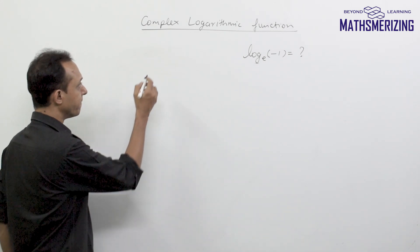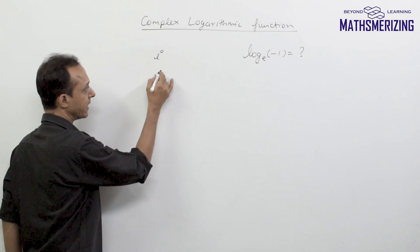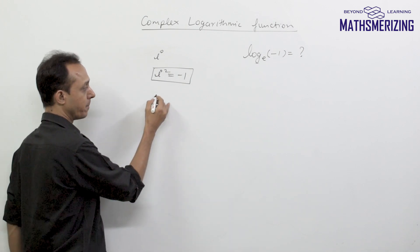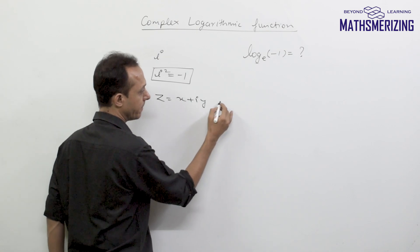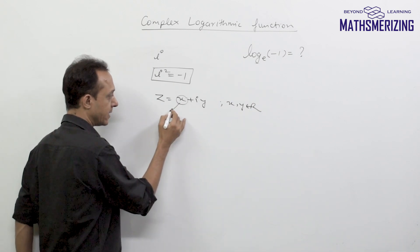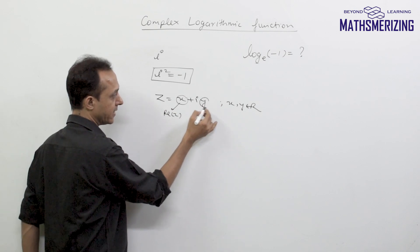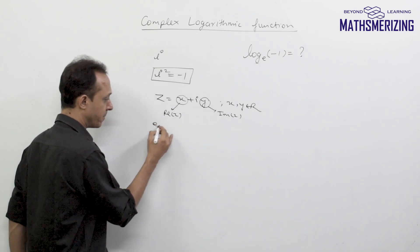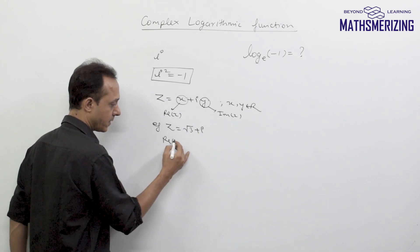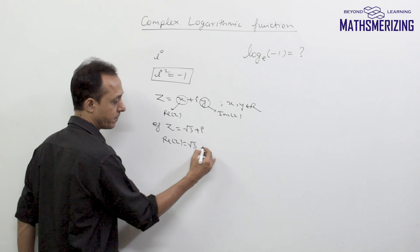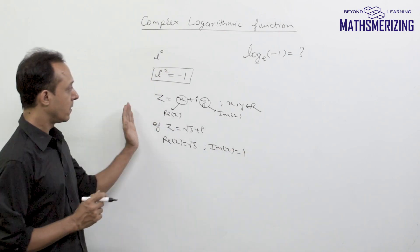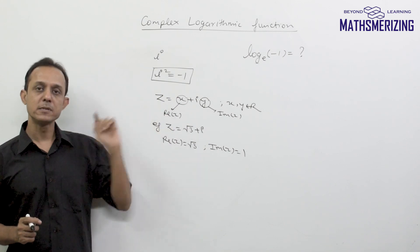Complex numbers started when Euler defined a quantity iota, defined as iota squared equals minus 1. We then came up with numbers of the form z equals x plus iota y, where x and y are real numbers. He called x the real part and y the imaginary part. For example, for the complex number √3 plus iota, the real part is √3 and the imaginary part — the coefficient of iota — is 1.